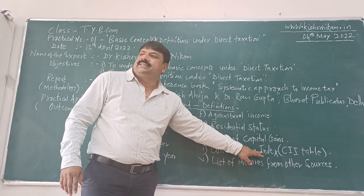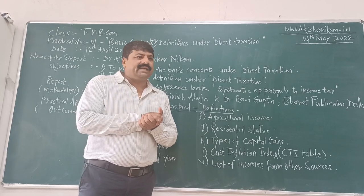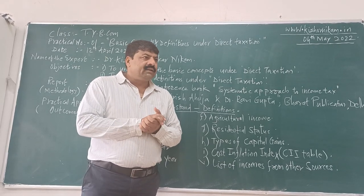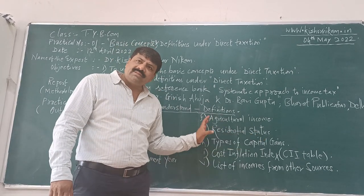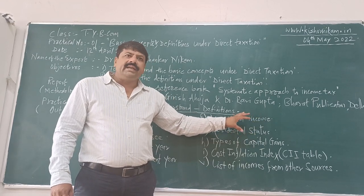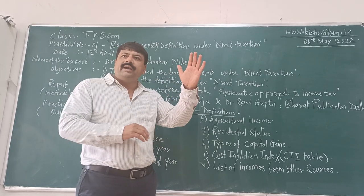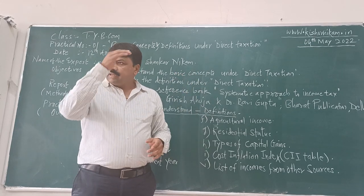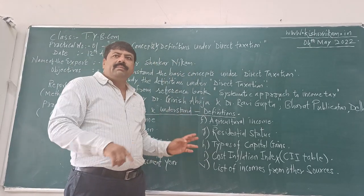And the Cost Inflation Index (CII) table is given in the reference book. Even in the book of Dr. L.P. Markle sir, you will get the table of Cost Inflation Index — you have to just write down that index table. 1981-82 was the base year and the base index was 100. So 1981-82: 100; 1982-83: 109; 1983-84 and so on — you have to just write down the year and that number. The table is there.